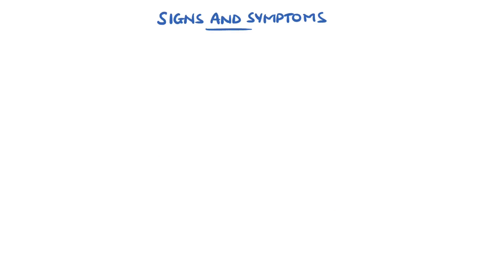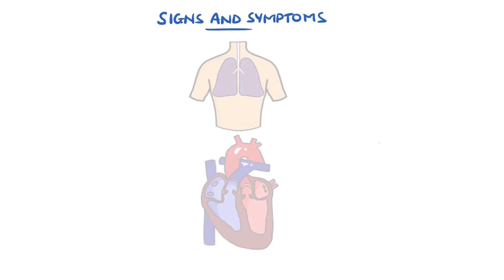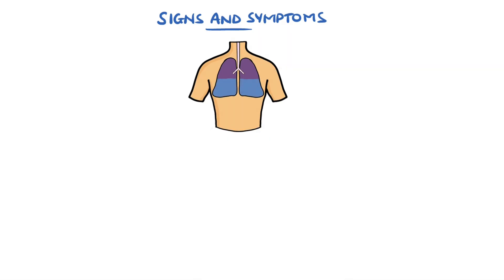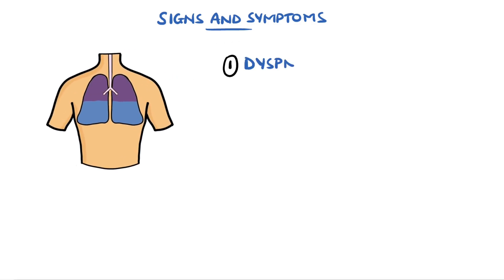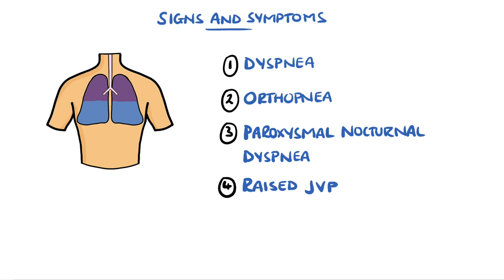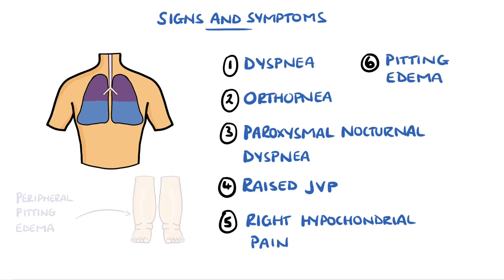If the heart is no longer able to pump blood onwards effectively, this can mean a backlog of blood into the lungs, resulting in pulmonary edema. This is why many of the signs and symptoms are linked to the lungs. They include dyspnea, meaning shortness of breath; orthopnea, meaning shortness of breath when lying flat, which may also cause paroxysmal nocturnal dyspnea, which is intermittent shortness of breath at night. Also remember, backlog from the right side of the heart is into the vena cava and venous circulation, which is why you could see a raised jugular venous pressure, right hypochondrial pain if the liver capsule is being expanded, and peripheral edema.